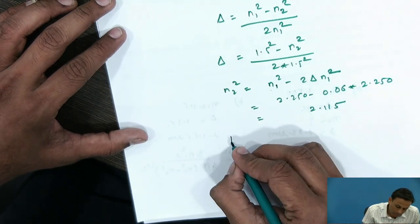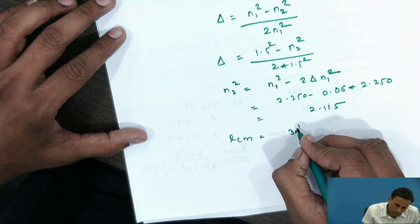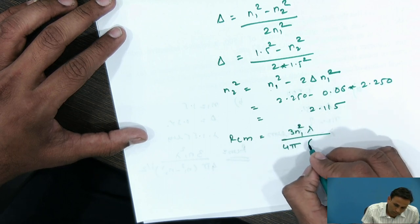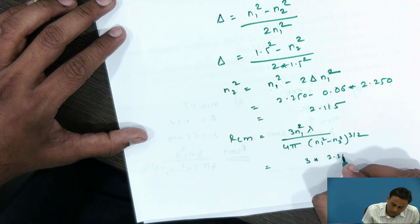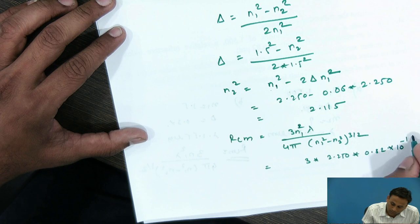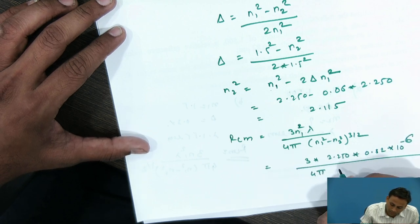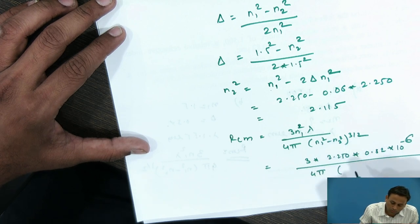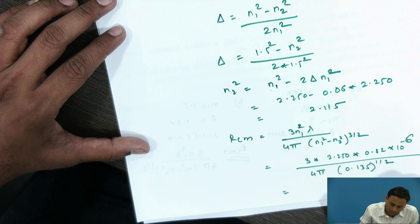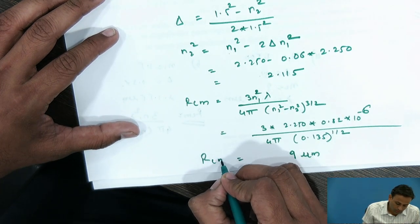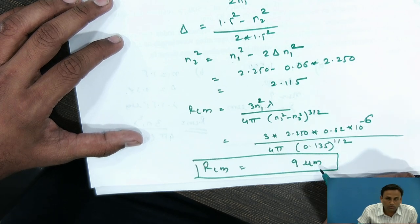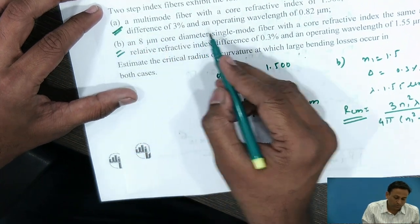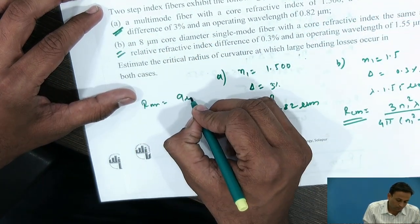Substituting all values into the RCM formula: RCM = 3×2.25×0.82×10⁻⁶ / (4π×(0.135)^(3/2)). Calculating N1² − N2² = 0.135, and (0.135)^(3/2) ≈ 0.0496. This gives RCM ≈ 9 micrometers. So the critical radius for the multimode fiber in Case A is approximately 9 micrometers.